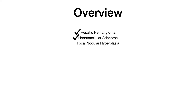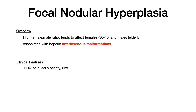The big takeaway from hepatocellular adenoma is its association with oral contraceptives and anabolic steroids. Now let's talk about focal nodular hyperplasia. This has a high female to male ratio, tending to affect females roughly in the age range of 30 to 40; if it affects males, they tend to be more elderly. Focal nodular hyperplasia is associated with hepatic arteriovenous malformations — AVMs — a very high-yield association.